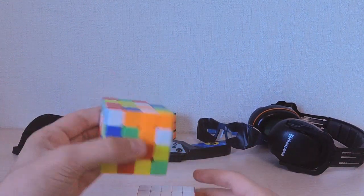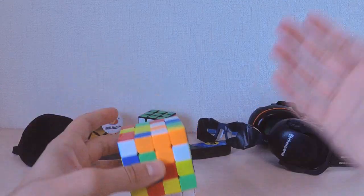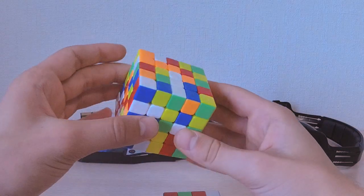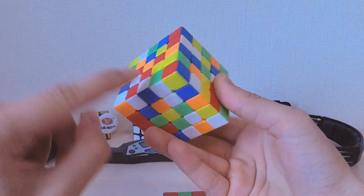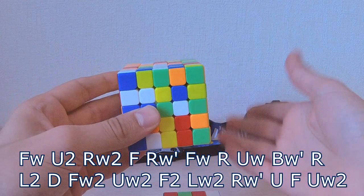So now let's just go deeper into the method and I'll show you an example solve. I'll be doing the example solve as if my buffer is UFL white green which is currently here. The scramble should be in the description and on your screen.